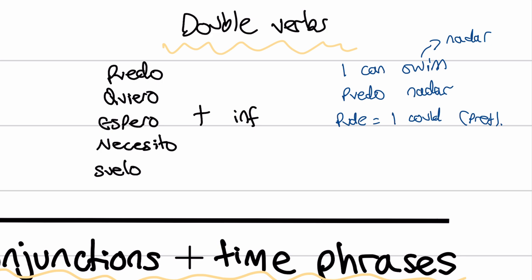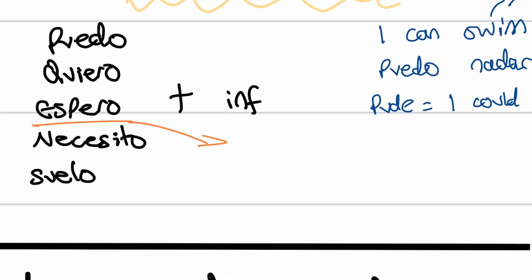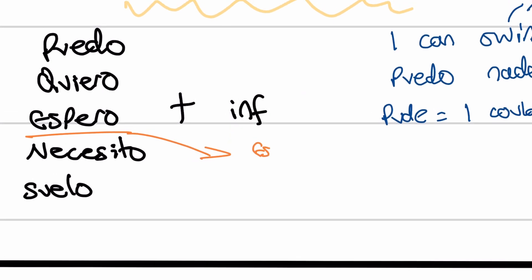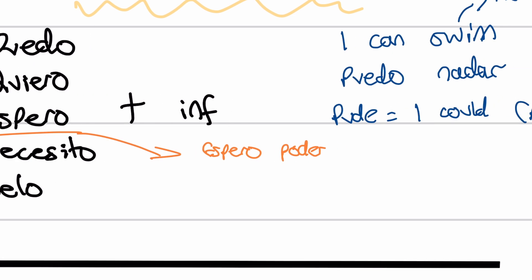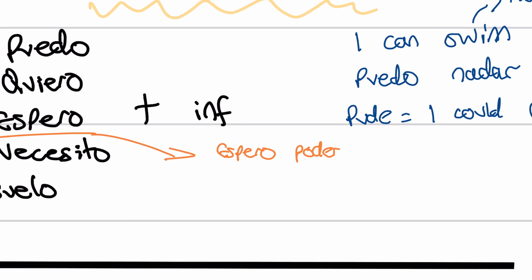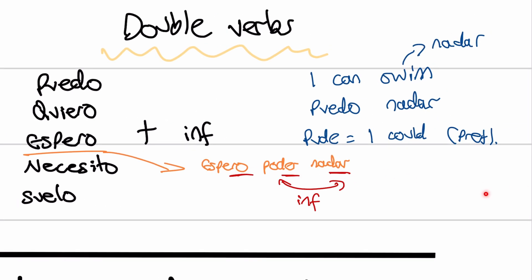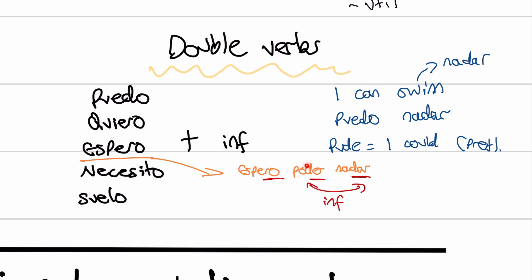Espero is slightly different — you can even have three verbs together. Espero poder nadar — I hope to be able to swim. Three verbs back to back: espero is conjugated, then poder and nadar are both infinitives, left completely untouched. This could lead on to a whole big sentence about swimming and why swimming is good for you.